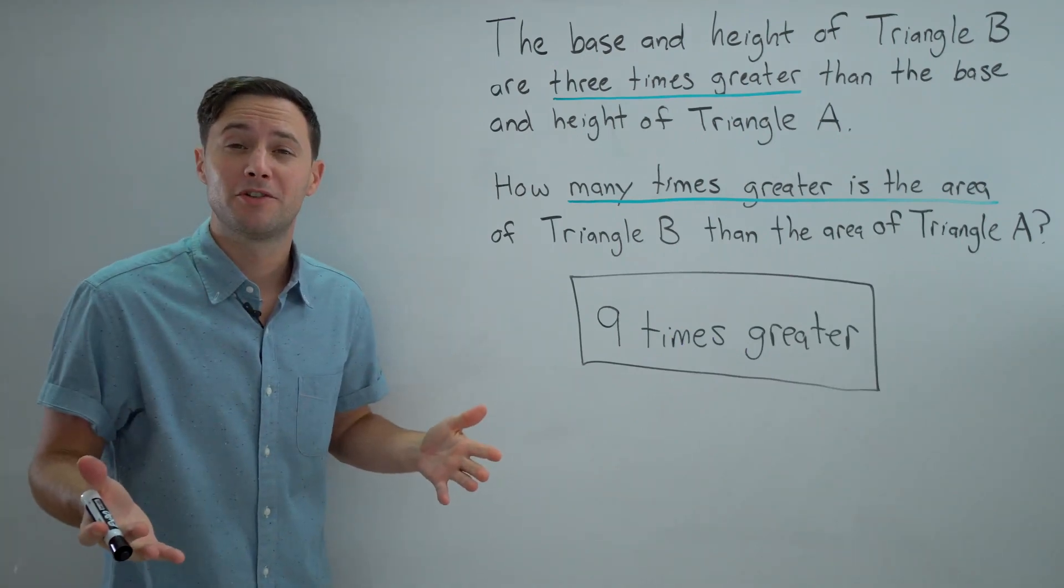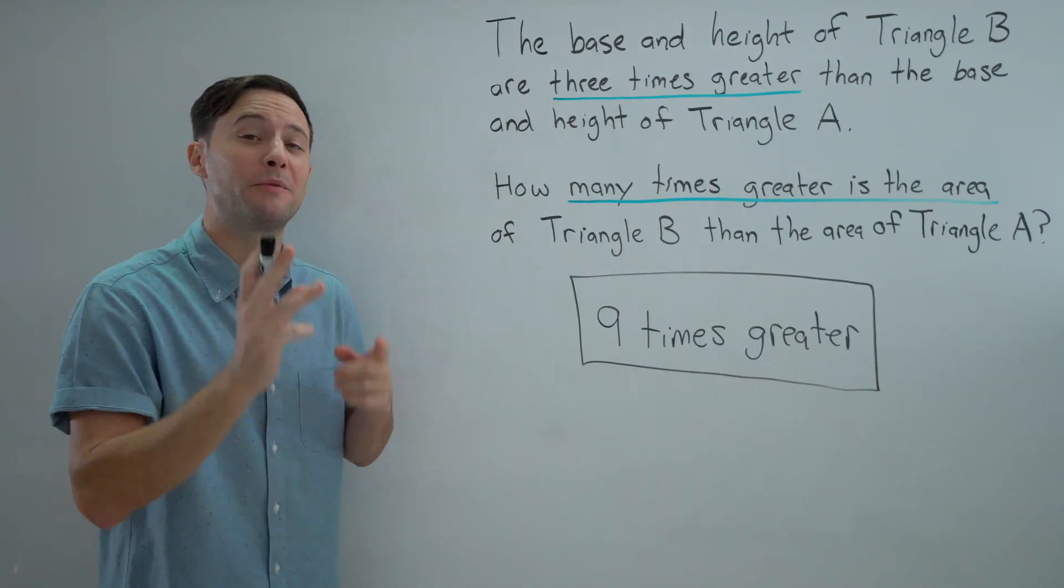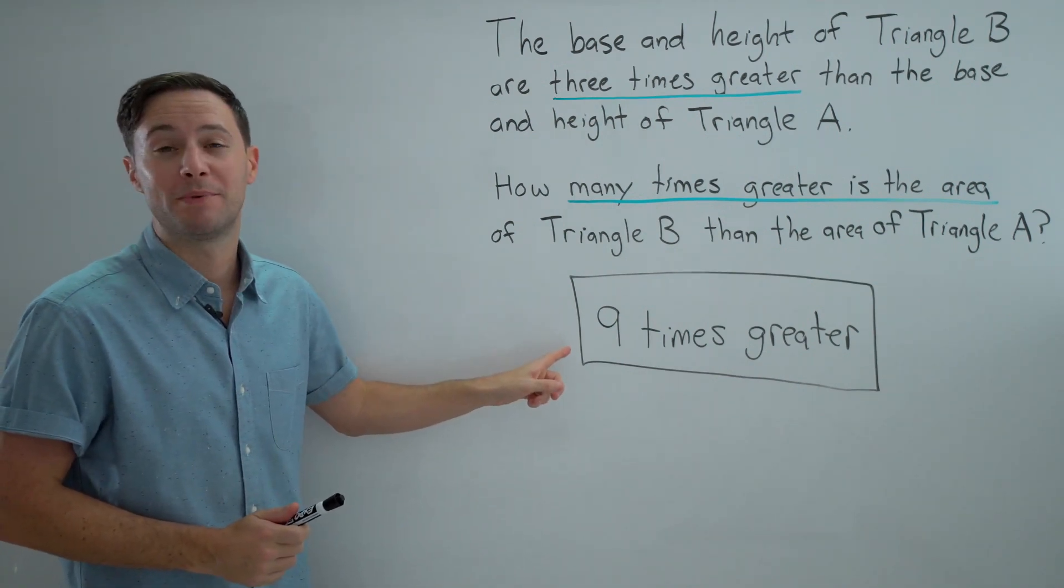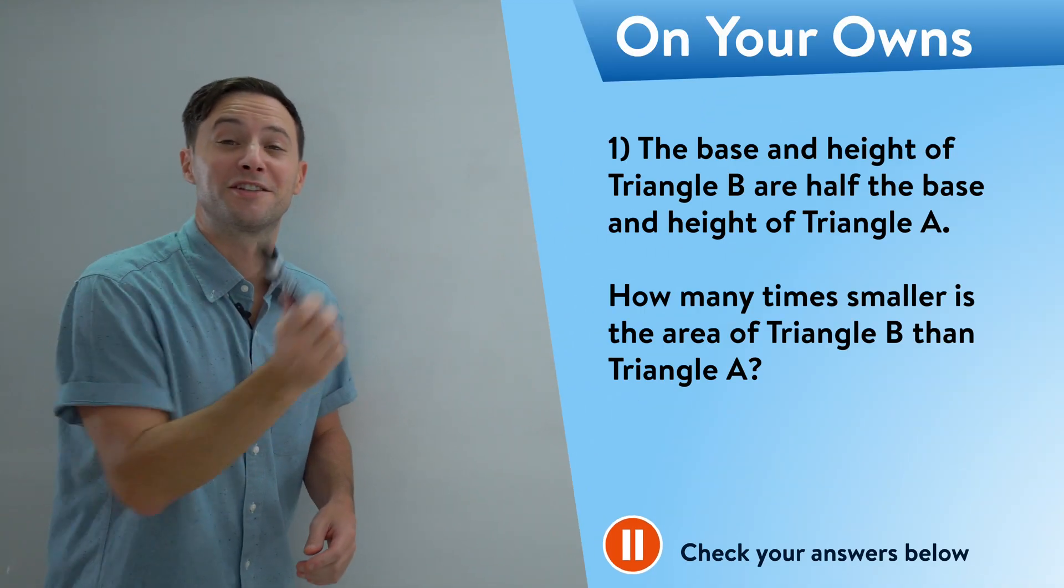No matter what numbers you choose for triangle A, as long as the base and height of triangle B are three times greater, the area of triangle B will always be nine times greater than that of triangle A. And here's one to try on your own.